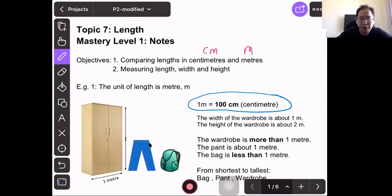Now we have these pants and the bag. The height of the wardrobe is more than one meter, it's about two meters. The pants is about one meter and the bag is less than one meter.